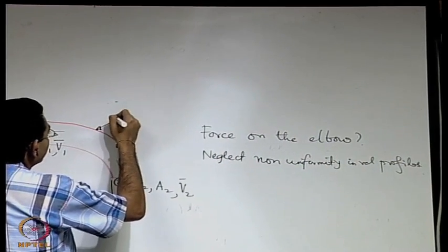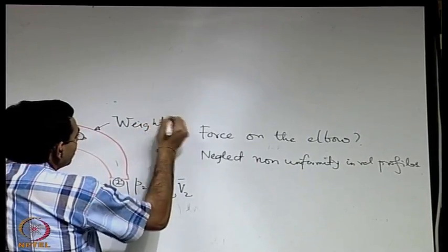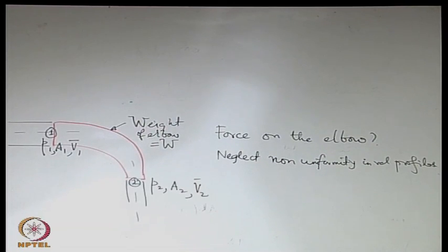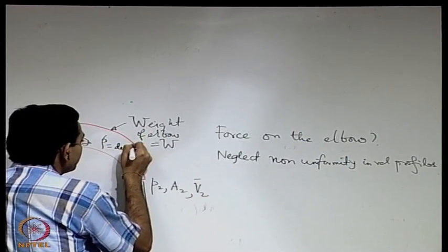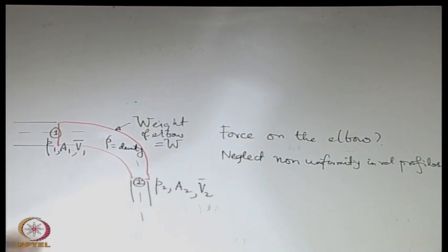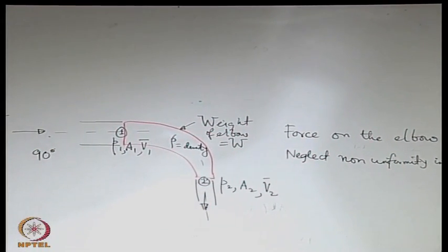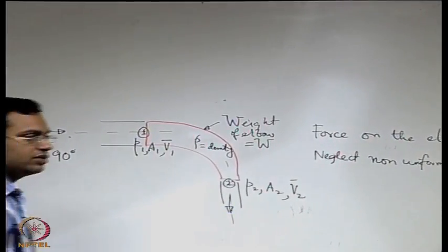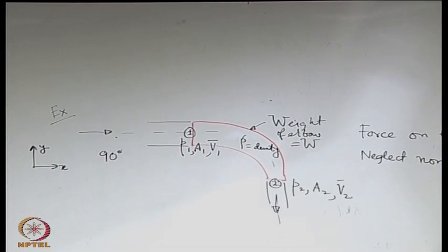Other given data: the weight of the elbow W is given. The elbow is a solid so it has its own weight. The density of water rho is given. The angle between inlet and outlet is 90 degrees — the water is entering in one direction and leaving in the perpendicular direction. If the angle were not 90 degrees, one would use horizontal and vertical components of the flux velocity accordingly.